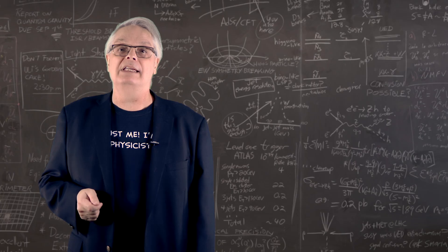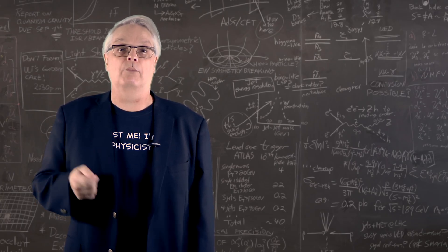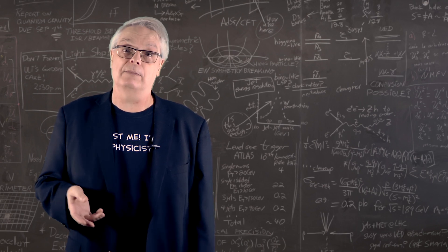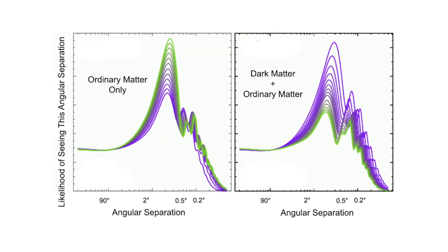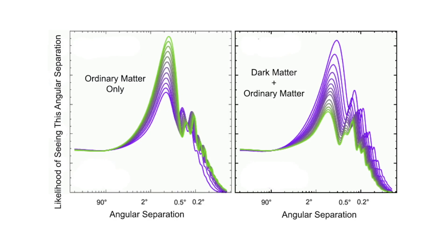But the CMB has more to tell us. It turns out that the spacing between adjacent bright and dark spots change depending on the mix of ordinary matter, dark matter, and dark energy in the universe. You can see here how the likelihood of finding different angles depends on how much dark matter existed in the early universe.